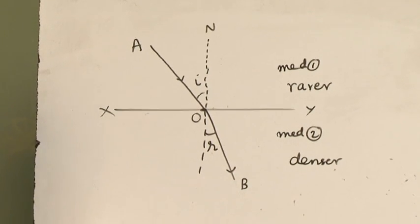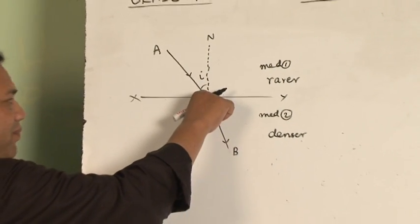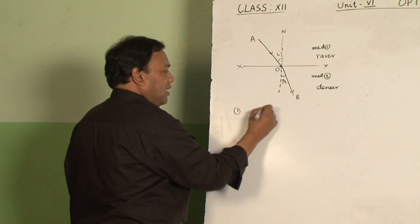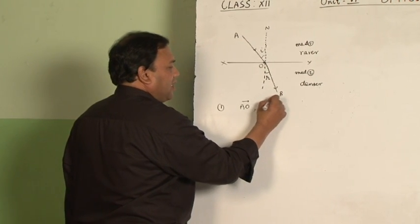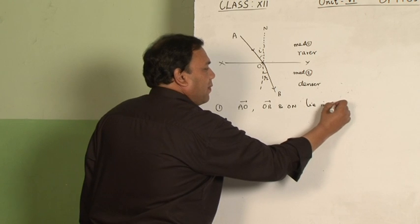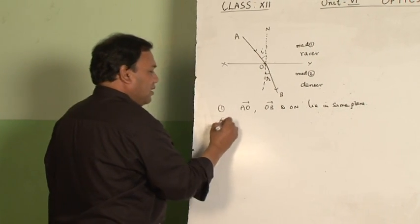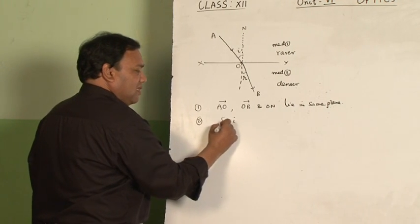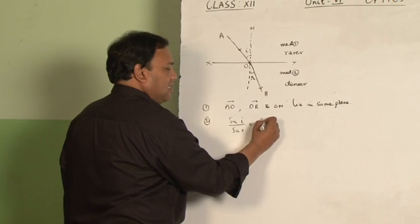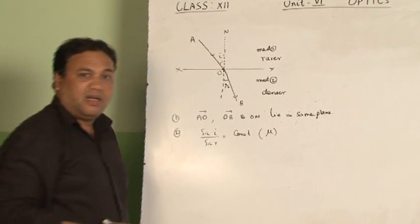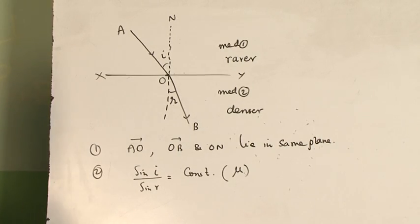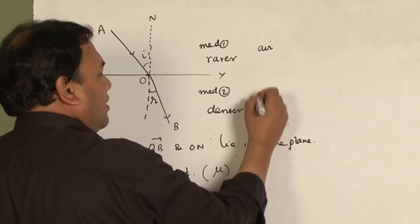The laws of refraction: the first law states that the incident ray, the refracted ray, and the normal all lie in the same plane. The second law states that the ratio of sine of angle of incidence to sine of angle of refraction — sine i over sine r — is always a constant, called the refractive index of that medium. The refractive index can be defined in different ways; for example, if the first medium is air and the second medium is...